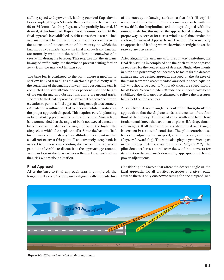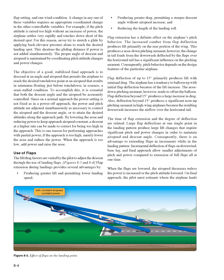The descent angle is affected by all four fundamental forces that act on an airplane: lift, drag, thrust, and weight. If all forces are constant, the descent angle is constant in a no-wind condition. The pilot controls these forces by adjusting airspeed, attitude, power, and drag—flaps or forward slip. The wind also plays a prominent part in gliding distance over the ground. The pilot corrects for wind's effect on the airplane's descent by appropriate pitch and power adjustments.